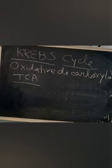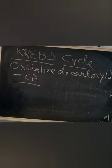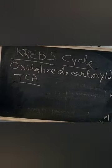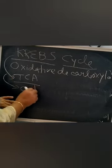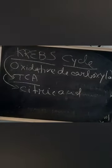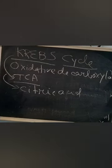In oxidative decarboxylation, pyruvic acid undergoes oxidative decarboxylation to form acetyl coenzyme A. CO2 is released, and NAD is converted to NADH+H+. Both dehydrogenation and decarboxylation occur here. Acetyl coenzyme A then combines with oxaloacetic acid to form citric acid, a 6-carbon compound. Citric acid is the first stable compound in the cycle, which is why the Krebs cycle is also called the citric acid cycle, discovered by Sir Hans Krebs.